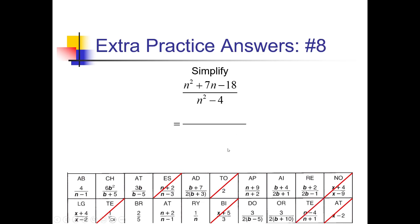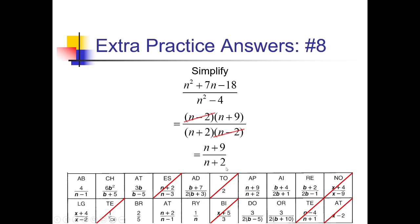For number 8, let me do a little factoring before I try canceling. For my numerator, I need factors of negative 18 that add up to 7 — negative 2 and positive 9 works, giving me (n − 2)(n + 9). Down here in the denominator, I can use my square-rooting shortcut: square root of n squared is n, square root of 4 is 2, so (n + 2)(n − 2). These (n − 2)s cancel out, and then (n + 9) over (n + 2) gives me my answer — AP right here. Cross that off.